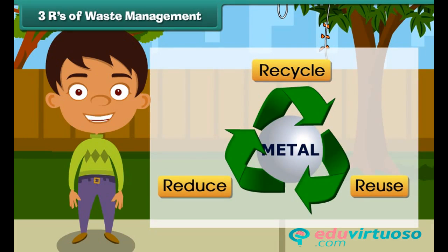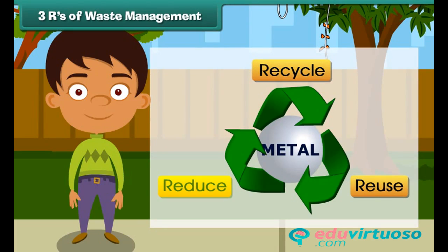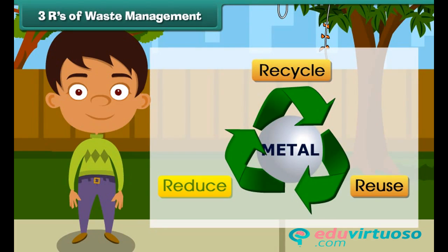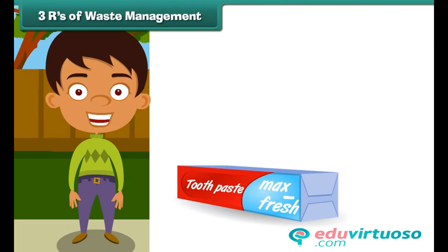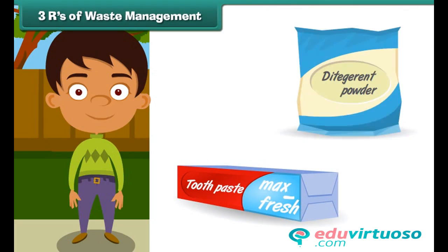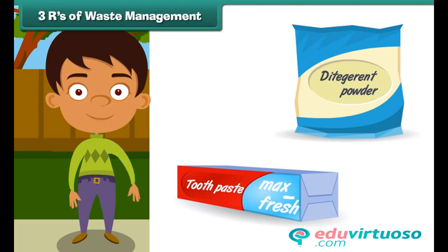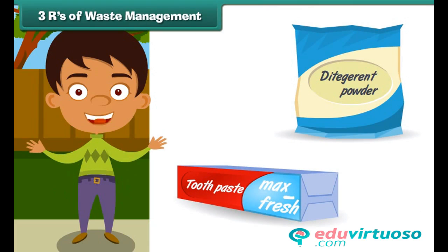The third R stands for Reduce. Reduce means to decrease the use of substances that harm the environment. For example, we must buy larger packs of toothpaste, dishwasher detergents, cereals, etc., and thereby reduce the quantity of packaging material used.